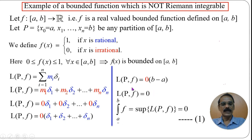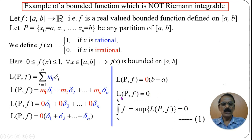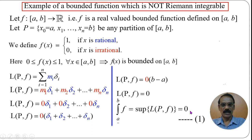If we take the supremum of all lower Riemann sums, since every value of L(P, f) is 0, the supremum is also 0. Therefore, the lower Riemann integral of f over [a, b] is 0.